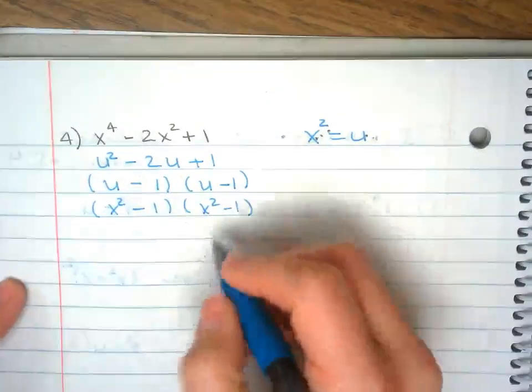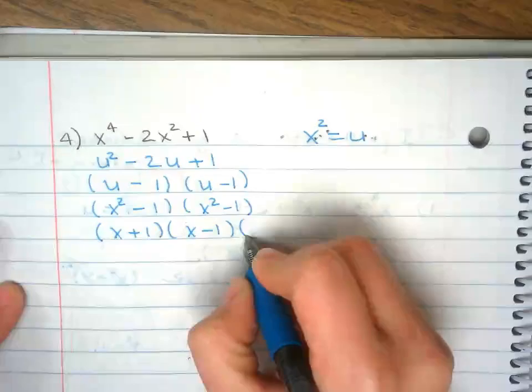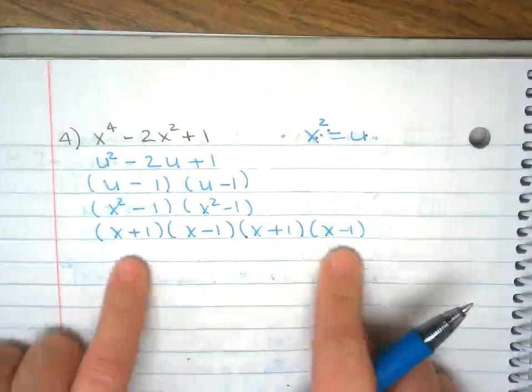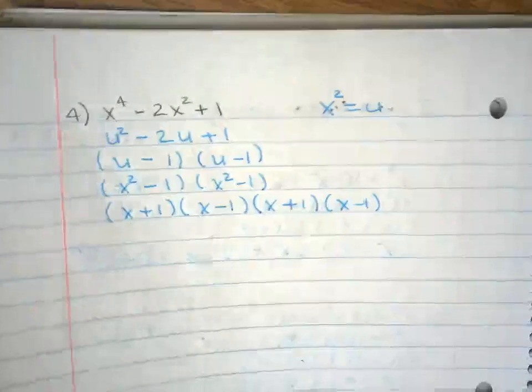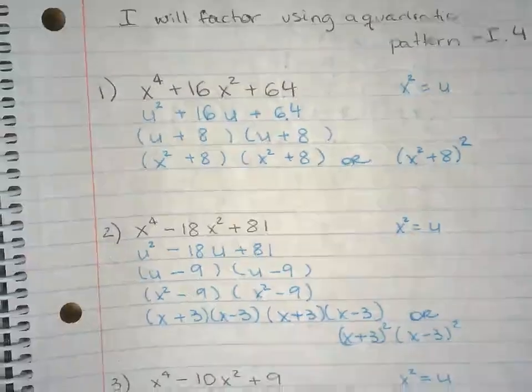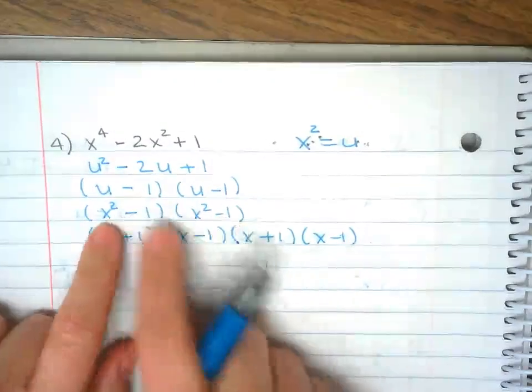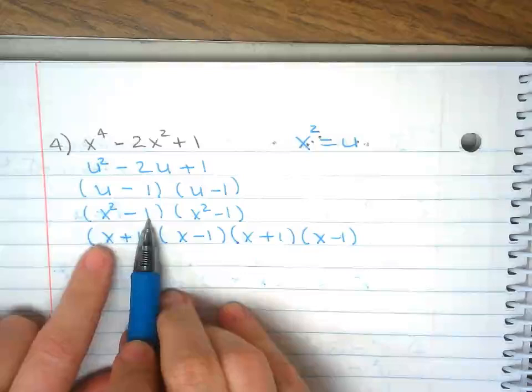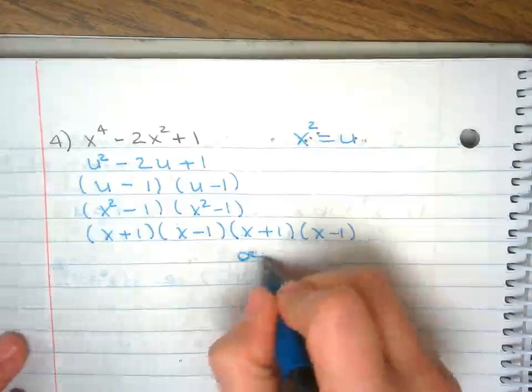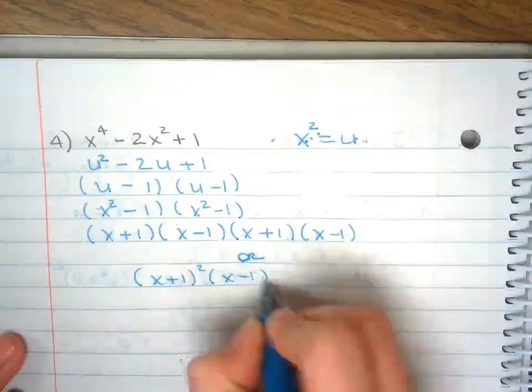Difference of squares. This is very similar to number two that we just did, but the reason why I wanted to do it with ones is because we always forget that one is a perfect square, so don't stop right there. You can write your answer like this or you can write your answer like this.